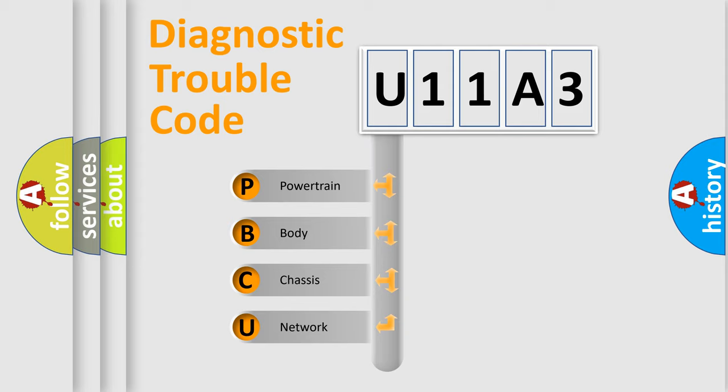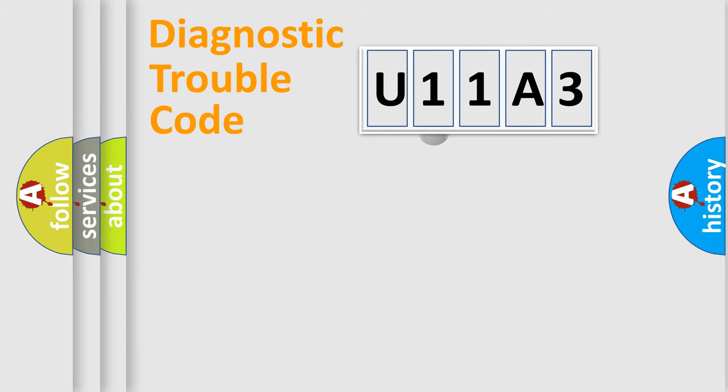We divide the electric system of the automobile into four basic units: Powertrain, Body, Chassis, and Network. This distribution is defined in the first character code.